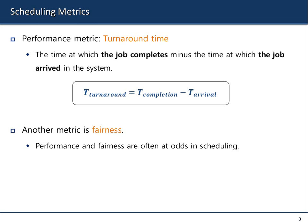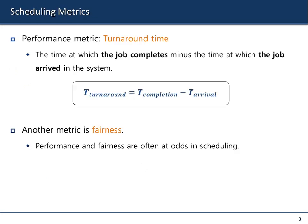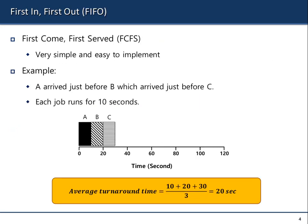We are considering the average turnaround time. For each process, turnaround time is completion minus arrival, and averaged across a given set of processes. The first scheduling policy we're going to look at is very simple: First Come, First Served (FCFS) or First In, First Out (FIFO).